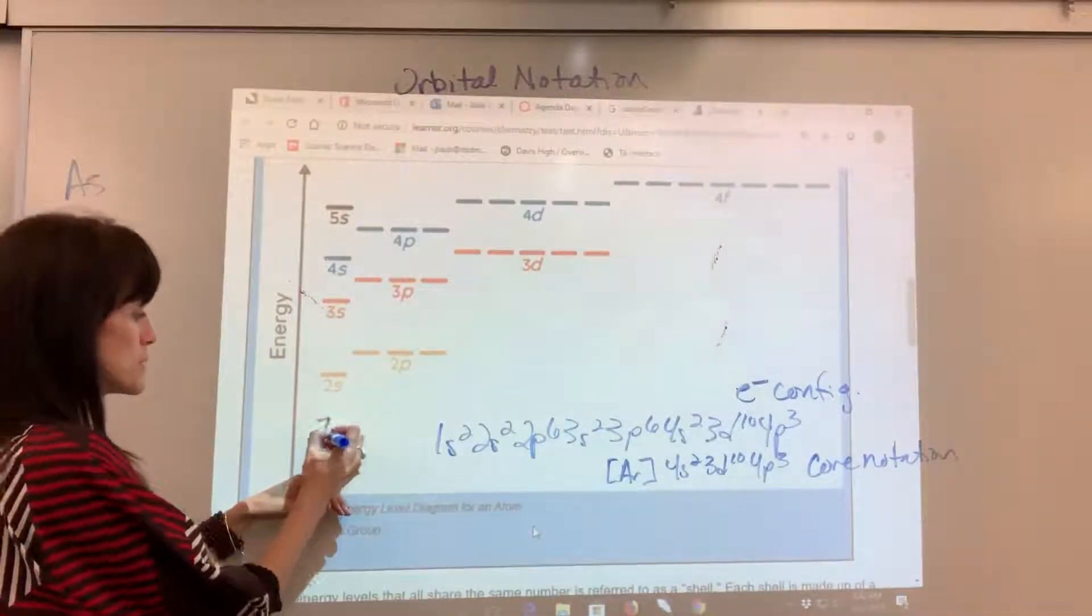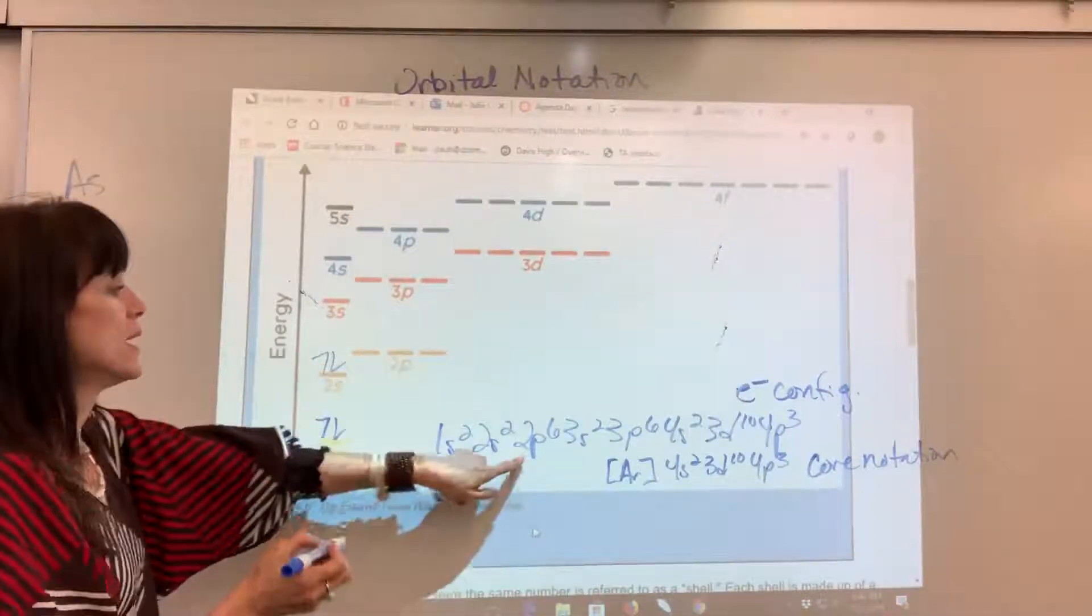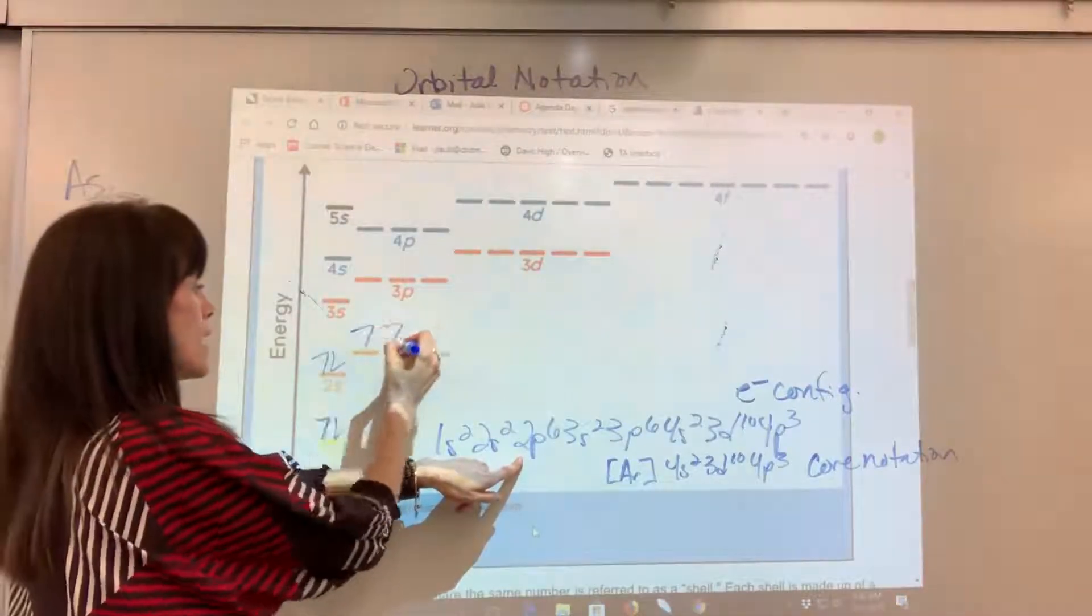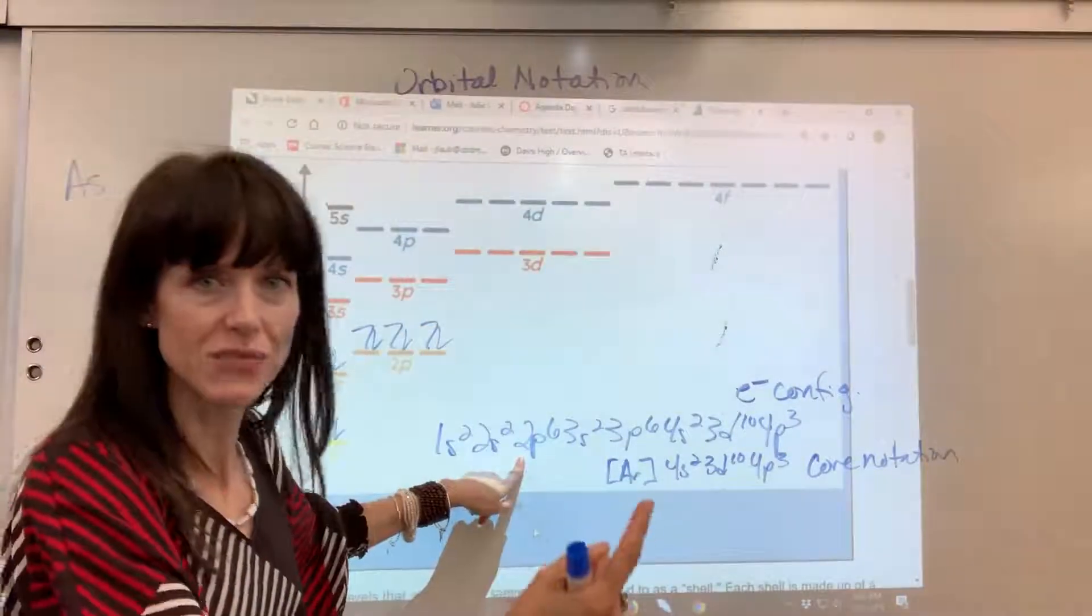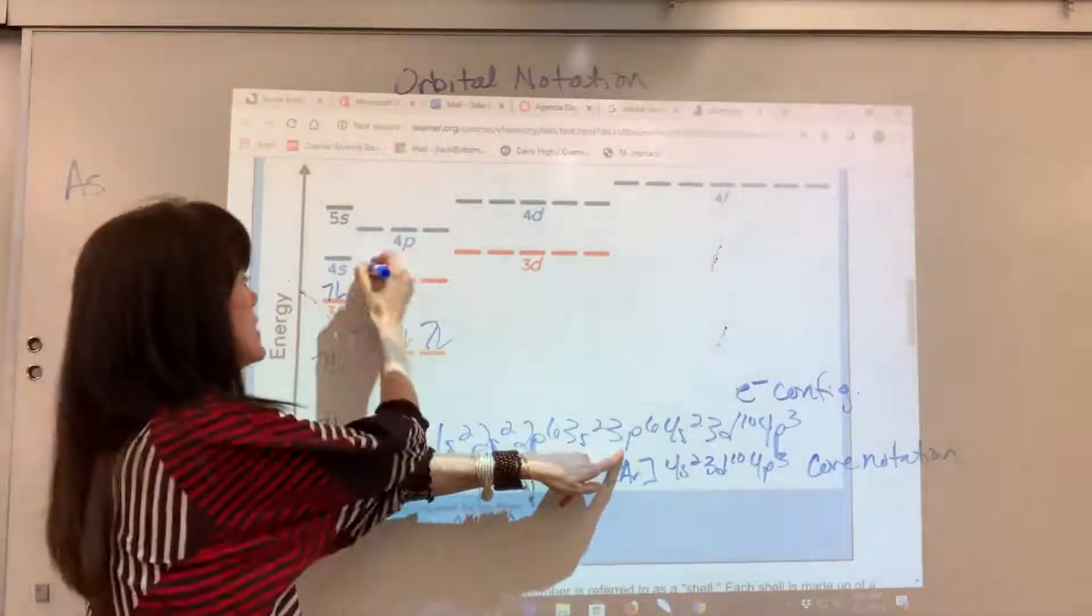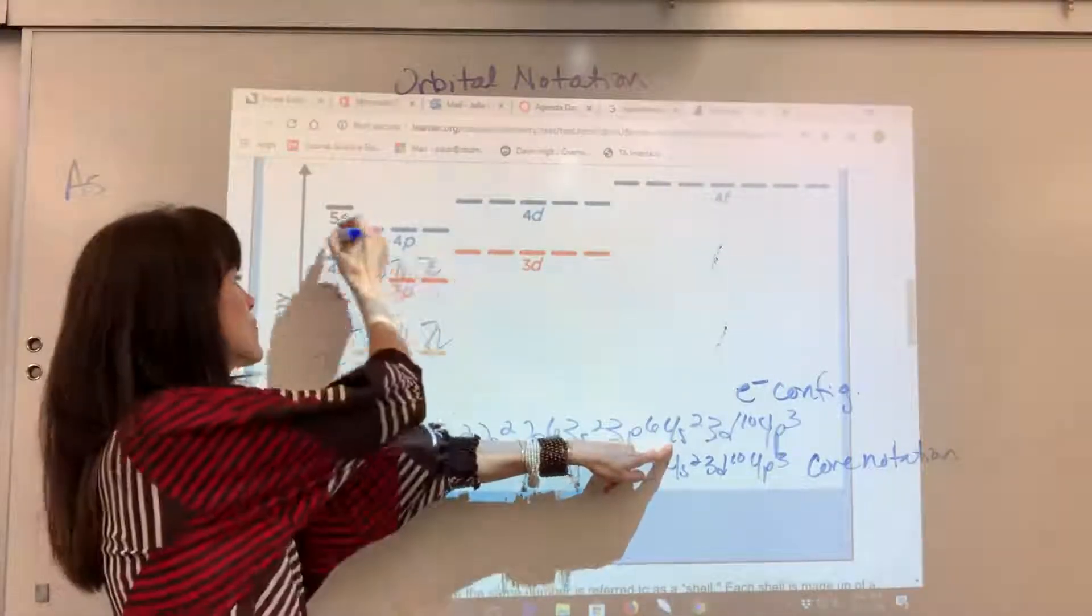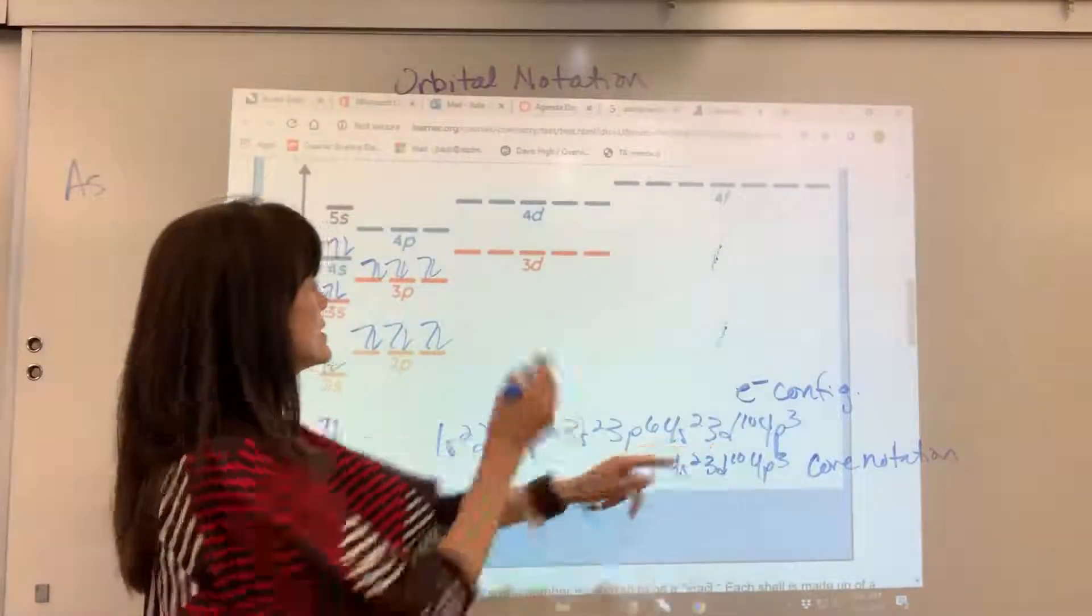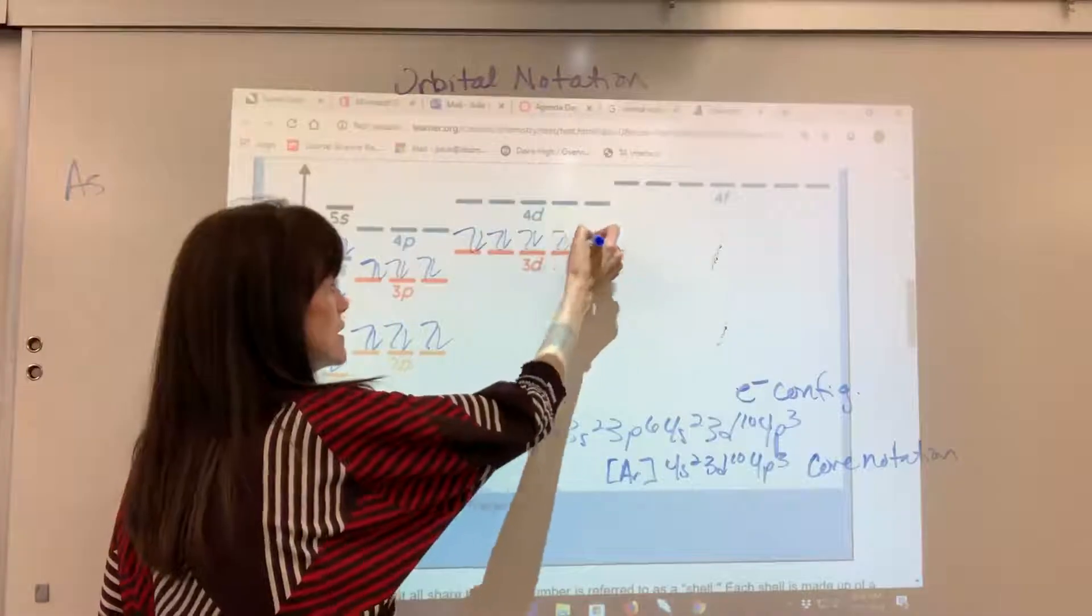And then the Pauli exclusion principle, spin those electrons one up, one down. There's 1s, 2s. Again, watch my 2p, up, up, up, down, down, down. We fill the orbitals individually and then we double up. 3s, up, down, 3p, up, up, up, down, down, down. Now I'm going to my 4s, up, down. 3d, up, up, up, up, up, down, down, down, down, down.